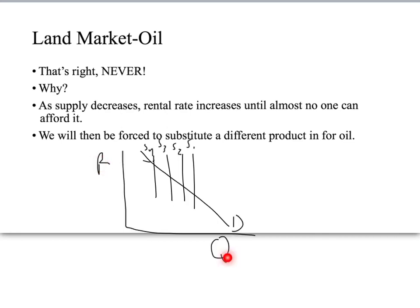As you can see, I've added in rent and quantity. Here are my supply curves as supply decreases to the left as oil runs out, and the rental rate will keep going up. If gasoline is $15 or $100 a gallon, people are going to start substituting oil out for something else. So oil will never really run out. It will become more scarce and prices will go up, yes — but we will never run out of oil.